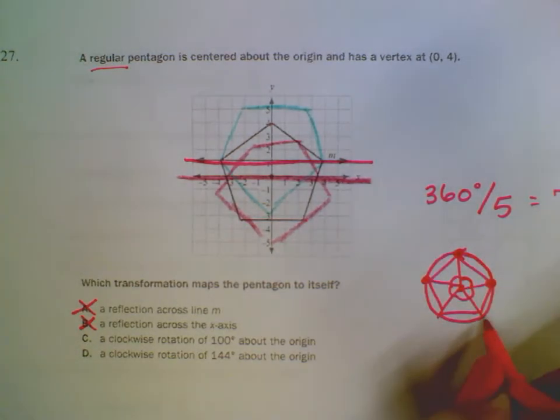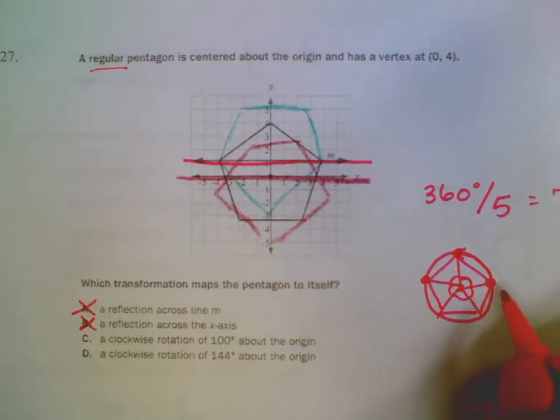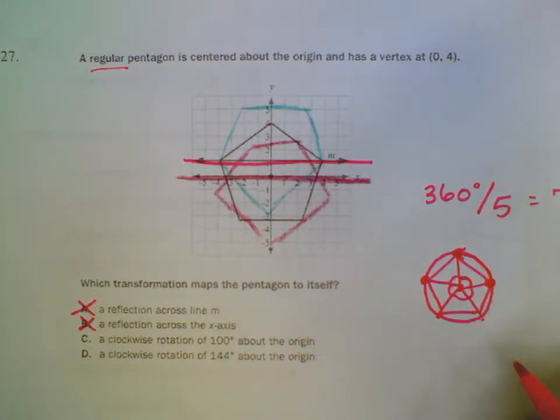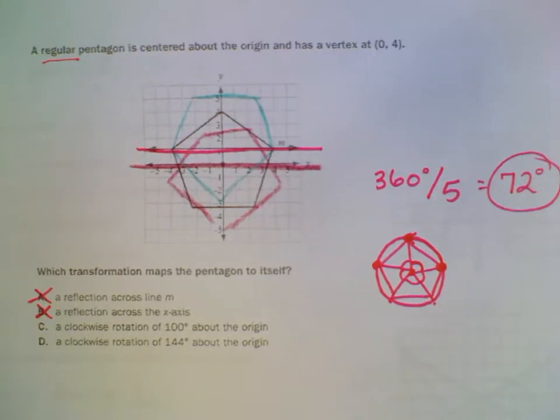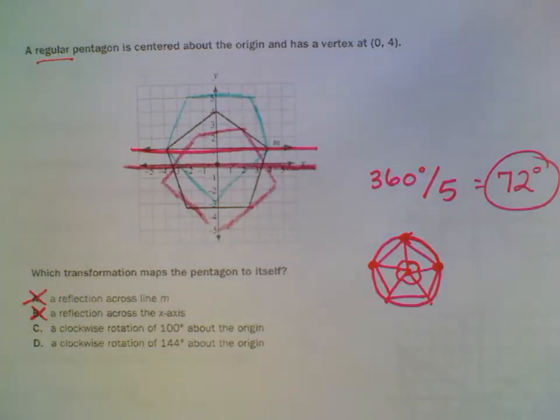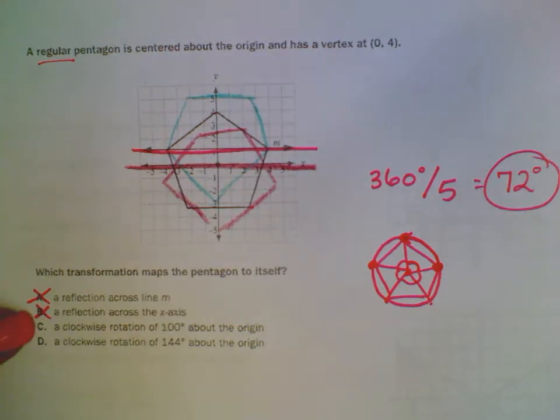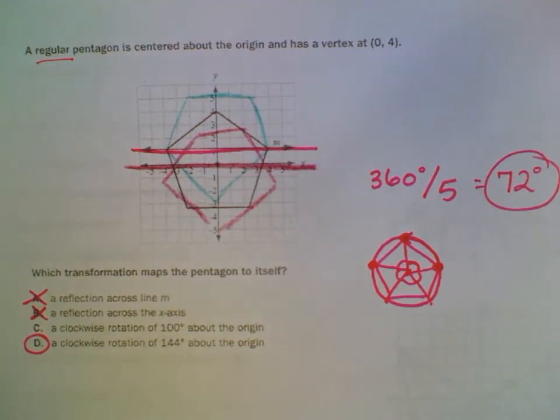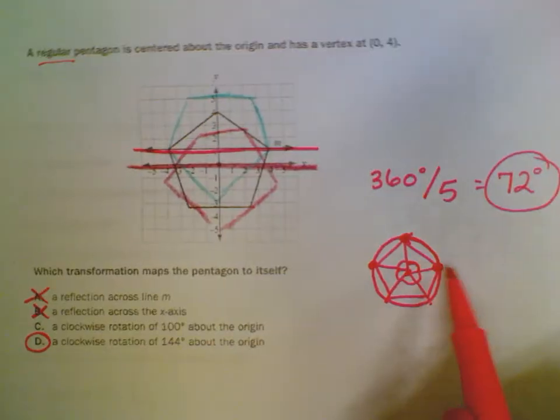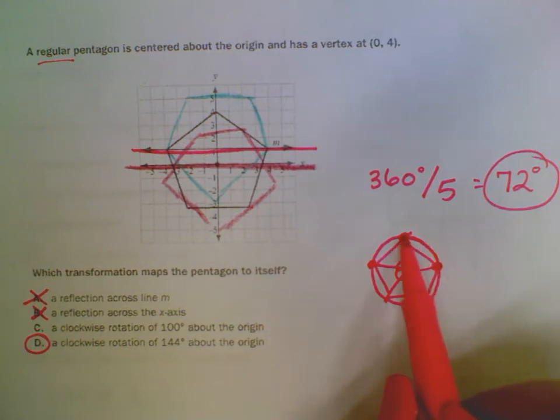If I do 3, 4, or 5, they will always line up those vertices. So, really, I'm looking for one of my rotations to be a multiple of 72. 100 is not a multiple of 72, but 144 is, which would be going from here to here, 72, 72.